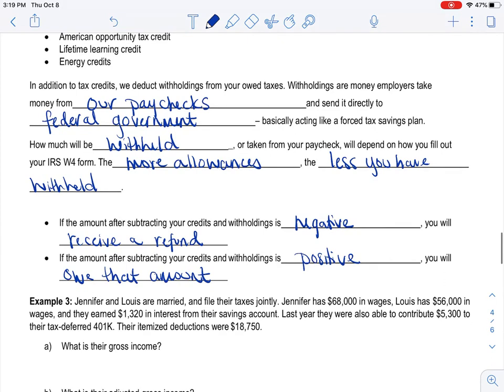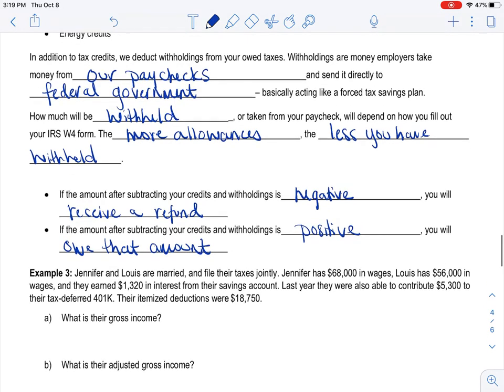If the amount after subtracting your credits and withholdings is positive, you will owe that amount. Alright, so let's put this to use. Jennifer and Louis are married and file their taxes jointly. So that's important, okay? And they're married. So that's going to let us know where to look in that chart. Jennifer has $68,000 in wages and Louis has $56,000 in wages and they earned $1,320 in interest from a savings account. So that's everything they earned. So that's your gross income.